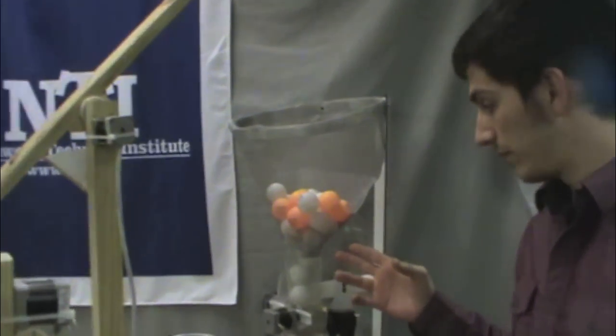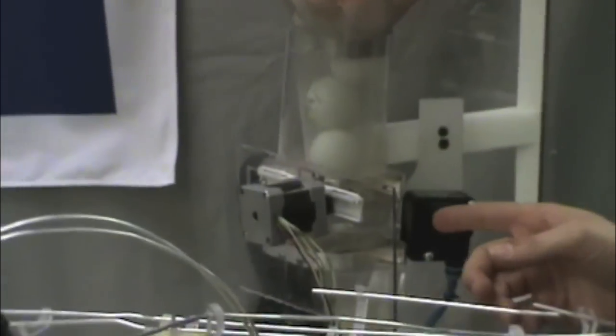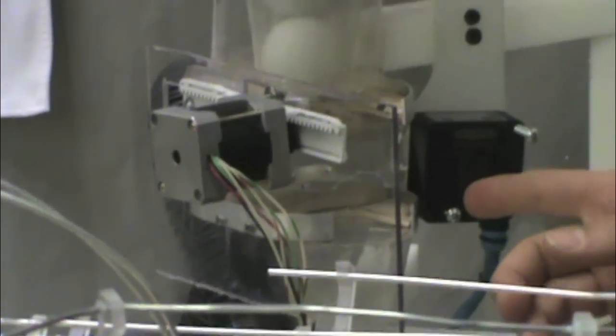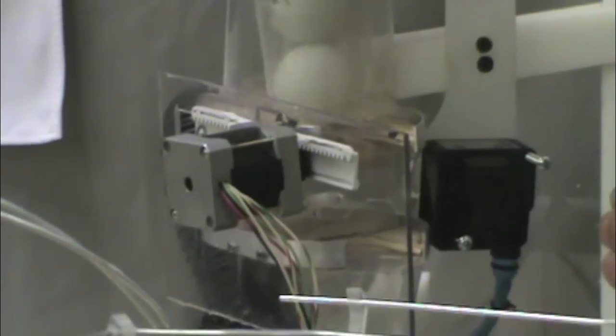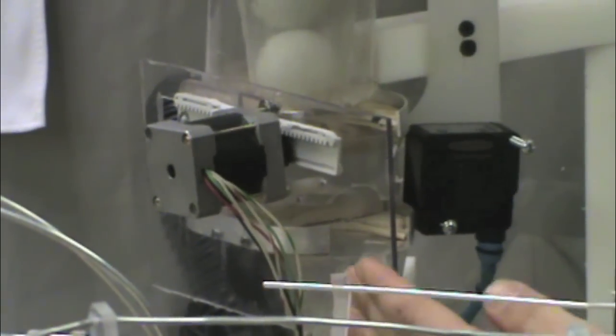This is our wire mesh ball hopper. It funnels the balls down to here, a sifter, where we have a color sensor in place and an applied motion motor that sifts the balls down one at a time.